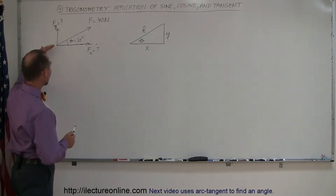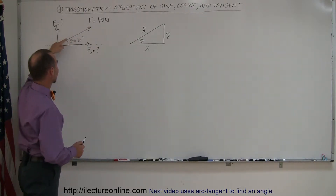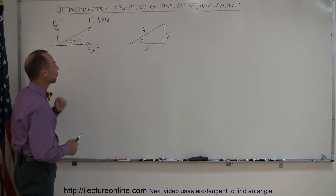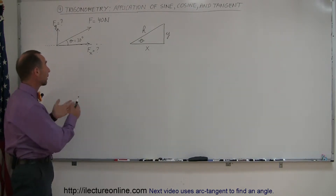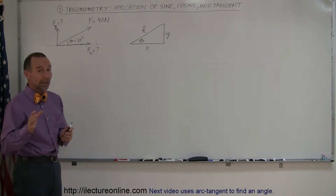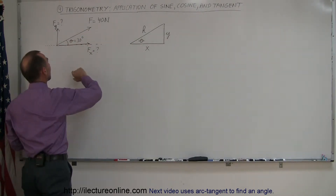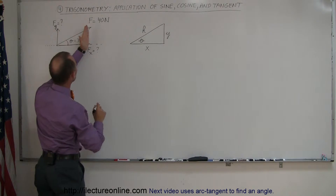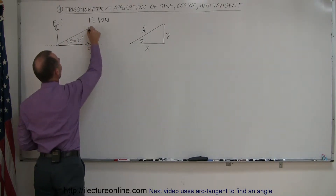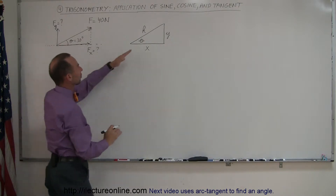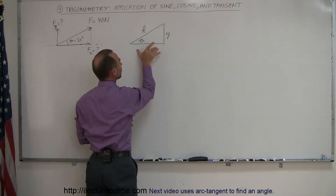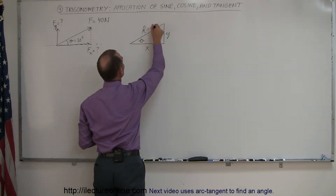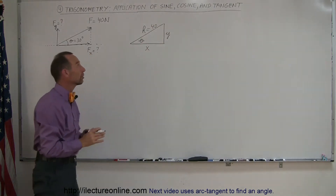Let's say we have a force that acts in a certain direction — 30 degrees above the horizontal — and we're supposed to find the x and y components of that force. You may not know anything about physics; that's okay. What it really comes down to is that we have a hypotenuse, and we need to find the opposite and adjacent sides of the angle. We can draw a dashed line to form a triangle, with an opposite side, an adjacent side, and a hypotenuse. In our case, the hypotenuse has a value of 40 newtons.